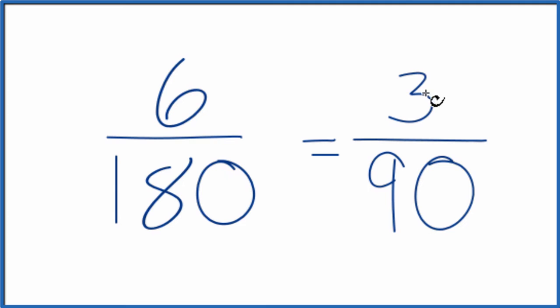Because now I know that 3 will go evenly into 90. 3 times 30, that's 90.